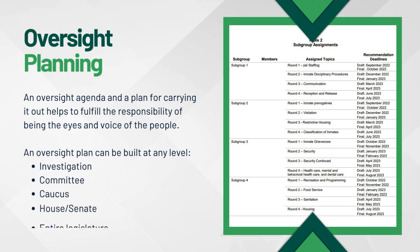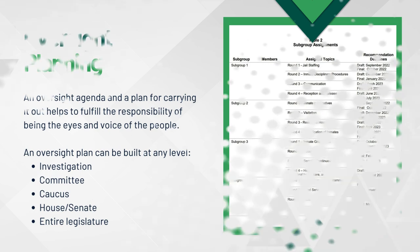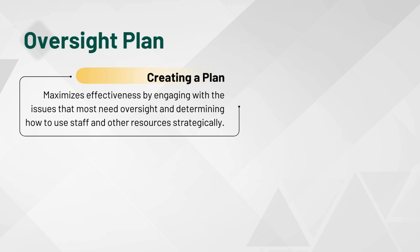What the Supreme Court said in 1953 about Congress and oversight applies equally to state legislatures. In carrying out oversight, you are the eyes and voice of the people. To fulfill that responsibility, you need an oversight agenda and a plan for carrying it out. You can build an oversight plan on any level from a committee to the full legislature. Creating a plan for oversight enables an elected official, a committee, a caucus, even an entire legislature to maximize the effectiveness of its oversight power by engaging with the issues that most need oversight and using its staff and other resources strategically to affect positive change.